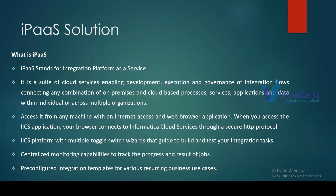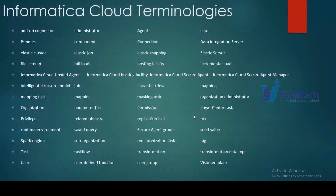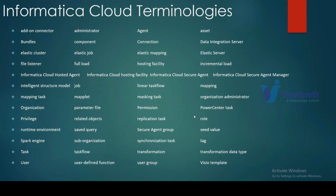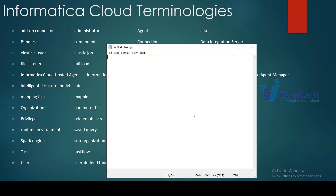Let me give a high-level overview of cloud terminologies. You'll encounter terms like add-on connectors, administrator agent, assets, bundles, and components as part of Informatica Cloud. For those from a PowerCenter background, let me give a quick comparison. Informatica Intelligent Cloud Services is called IICS, and comparing it with on-premise PowerCenter: in PowerCenter you need a client and a server, whereas in IICS you have a browser-based UI.